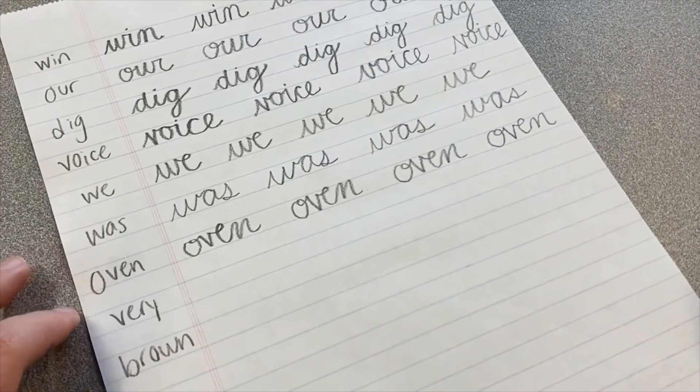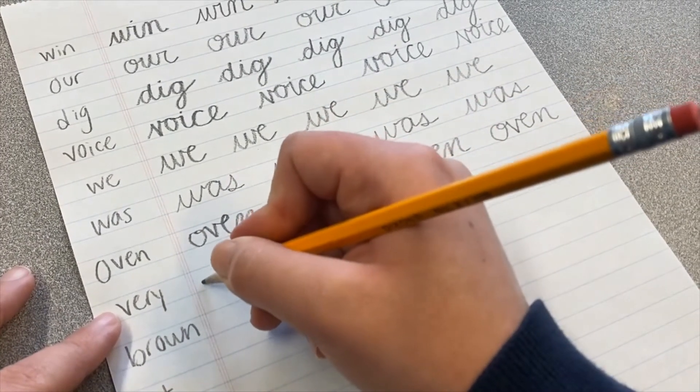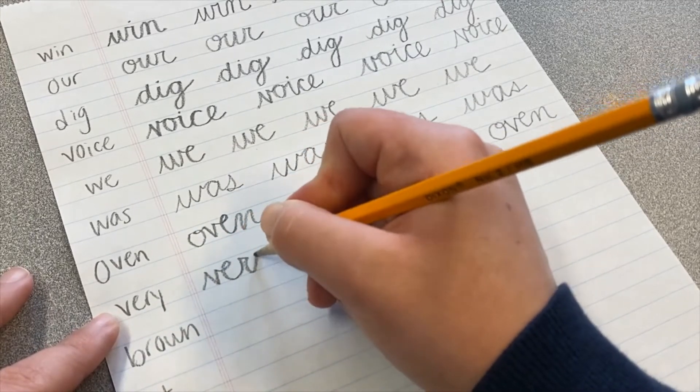The next word we'll do is vary. So we'll take that V and E from in there. So V-E-R-Y, and then we'll put an R and a Y.